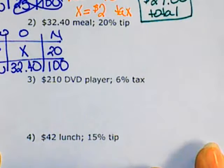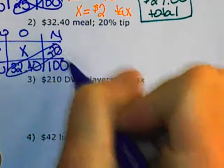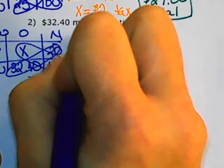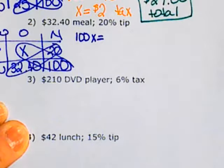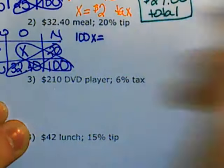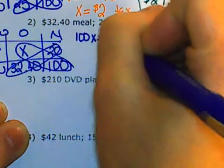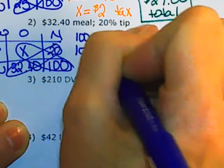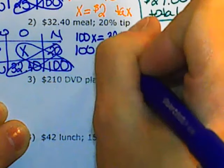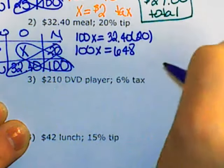We are looking for the amount of tip. We cross-multiply. We get 100 times x equals $32.40 times 20, and 100x equals 648.